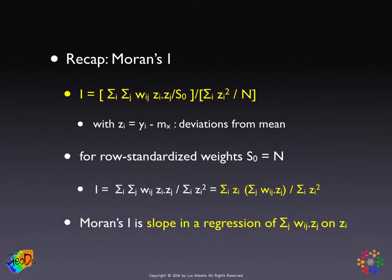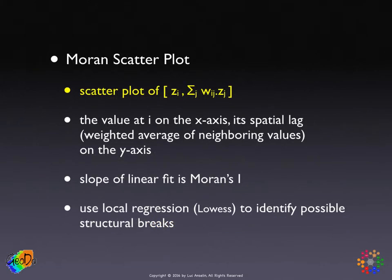It's a purely algebraic result, which is very handy because it allows us to visualize the magnitude of Moran's I in what we call a Moran scatterplot — simply a scatterplot with standardized values on the x-axis and the spatial lag on the y-axis. All points pertain to the pair of the value at a location and the average of the surrounding locations, and the slope of the linear fit is Moran's I.